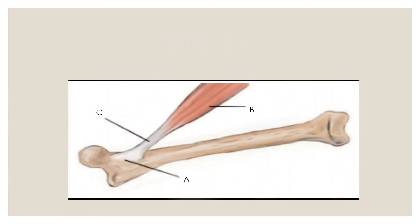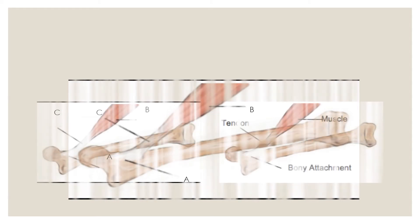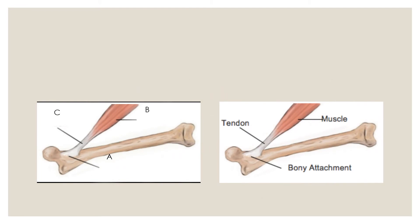Observe this picture carefully and note down your observations. A stands for the bone — the bony attachment. B is the muscle. And these two are joined with the help of a connective tissue known as tendon.